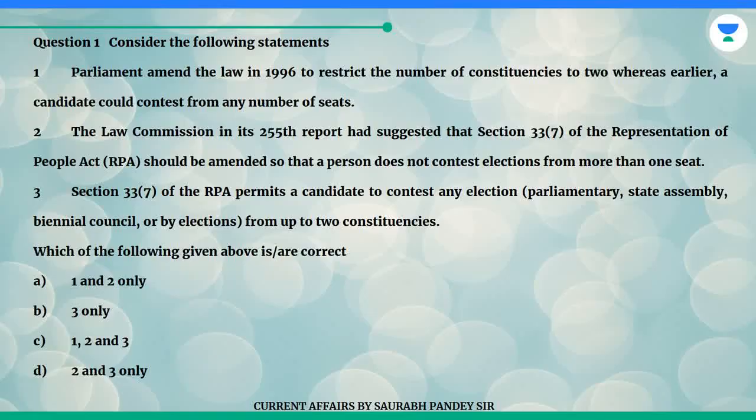Consider the following statements. One: Parliament amended the law in 1996 to restrict the number of constituencies from which a candidate could contest, whereas earlier a candidate could contest from any number of seats. Two: The Law Commission in its 255th report had suggested that Section 33.7 of the Representation of People Act (RPA) should be amended so that a person does not contest elections from more than one seat.